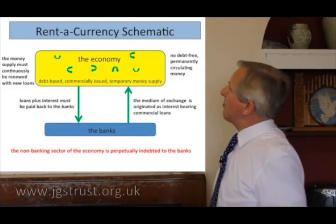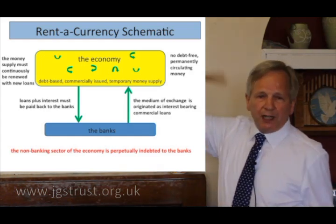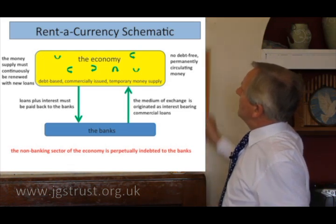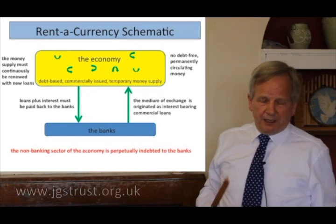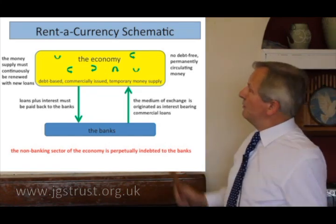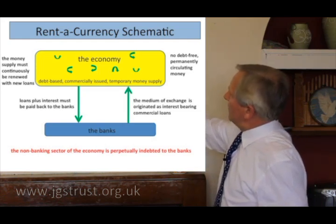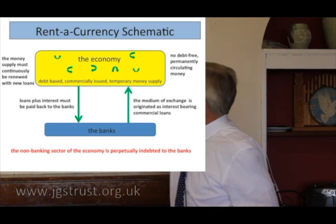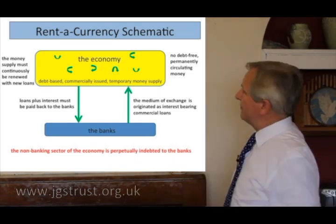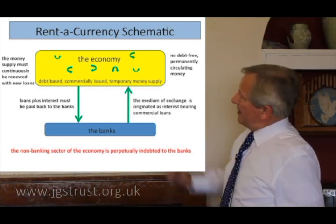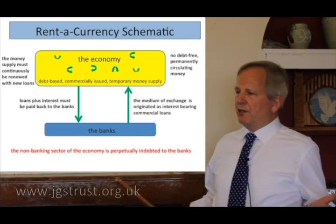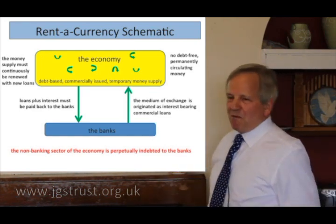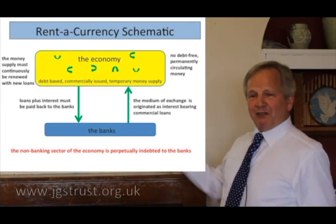Let's look at it schematically. Here's us in the economy; these arrows mean the money's going round and round. What goes round and round is digits in banks' computers, and none of it is debt-free, and none of it is permanent. It's all temporary, transient, ephemeral. It comes into the economy from interest-bearing commercial loans, and it drains back out of the economy as the loans plus the interest. So the banks extract wealth from the economy by renting to us a bunch of numbers. It's quite a good business, isn't it? And the numbers they get back as interest, they can spend those back into the economy.